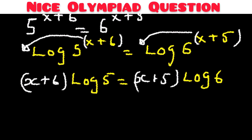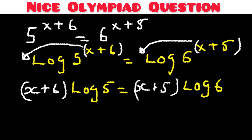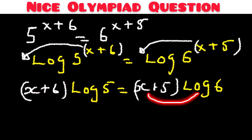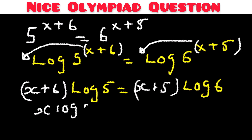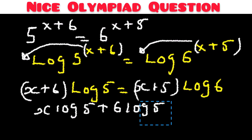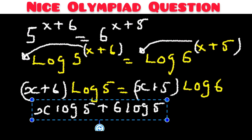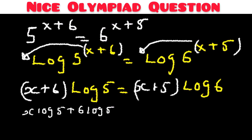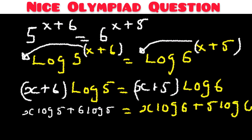The next step is to expand by distribution. Multiplying out, we get x times log 5 plus 6 times log 5 on the left side, and x times log 6 plus 5 times log 6 on the right side.